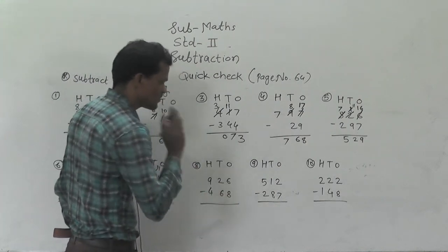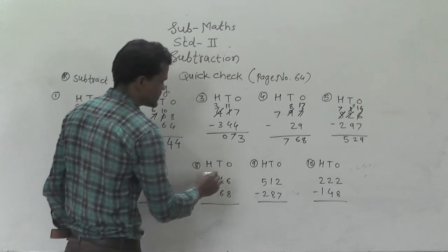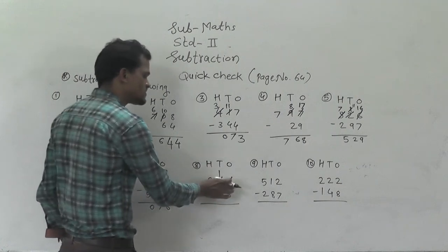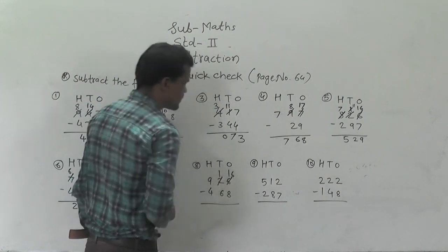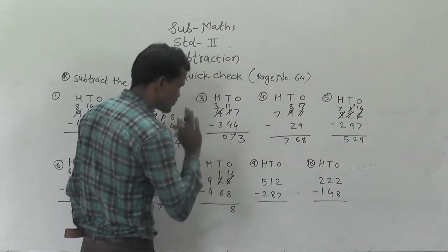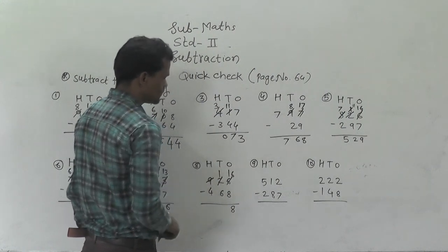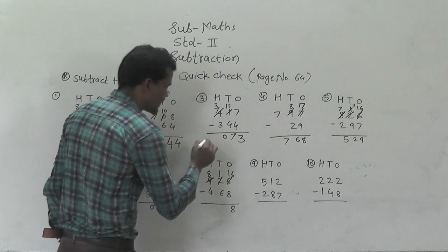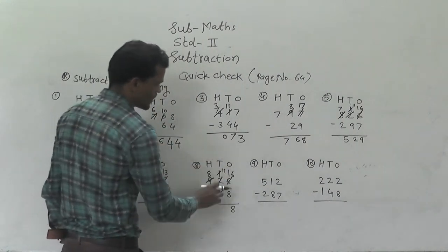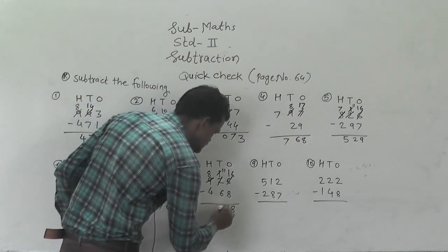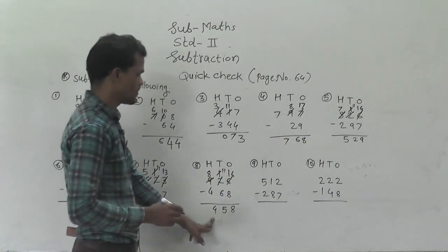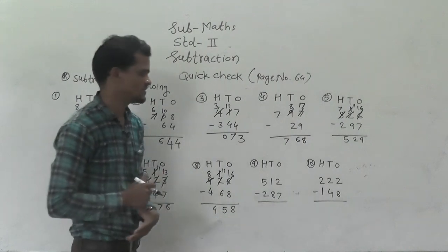Next: 6 minus 8 — not possible. So regroup this 2 tens into 1 ten and 10 ones, and that 10 ones add into this 6 ones, so you will get 16 ones. Now 16 minus 8 is 8. Then 1 minus 6 — not possible. So regroup this 9 into 8 hundreds and 10 tens. Now 11 minus 6 is 5. Then 8 minus 4 is 4. So 458 is the answer.